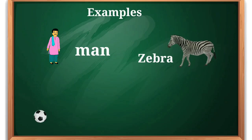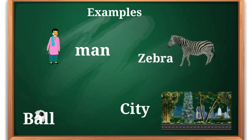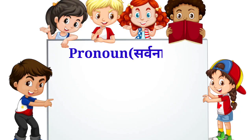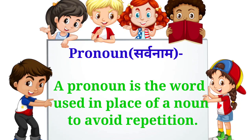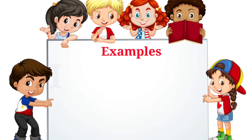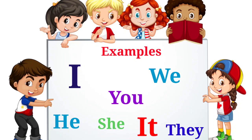The second part of speech is pronoun — 'sarvana.' A pronoun is the word used in place of a noun to avoid repetition. Pronouns are used in place of nouns in sentences. Examples are: I, we, you, he, she, it, and they.